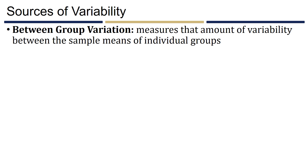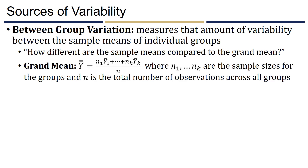Between-group variation measures how much variability exists between the sample means of the individual groups — specifically, how different the sample means of each group are compared to the grand mean. The grand mean, denoted by Y-double-bar, is the overall mean of every single response, ignoring group membership. It's calculated as a weighted average of all individual sample means: the sum of (n_i times y-bar_i) for each group, divided by N, the total number of observations.